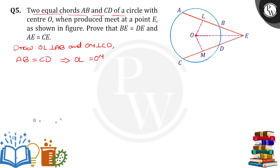Now we joined OE also. Now I am taking triangle OLE and triangle OME. These two triangles: OLE is equal to 90, OME is also equal to 90. Angle OLE is equal to angle OME, both are equal to 90 degrees.